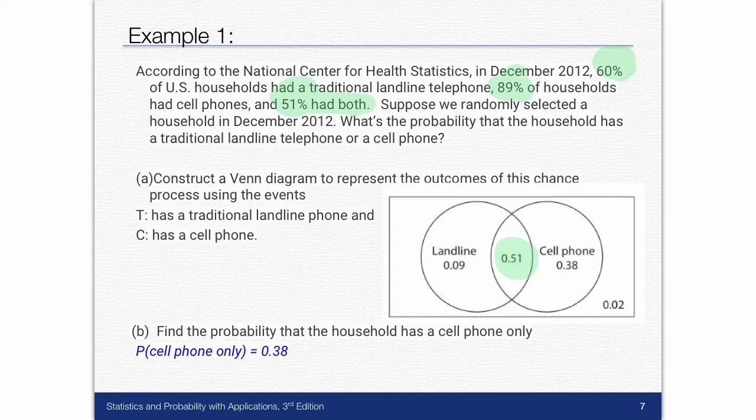Now the next thing I would look at is the 60 percent of U.S. households that had a traditional landline. So 60 percent make up this whole circle right here. Well 51 percent has already been taken up in the intersection. So I take 0.6 and I subtract 0.51 and that's where I get the 0.09.